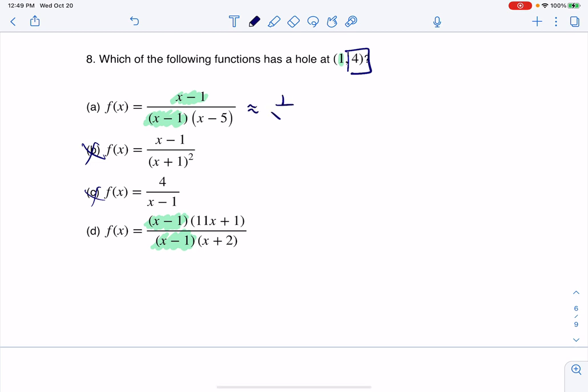This function basically looks like 1 over x minus 5. All right. And this one basically looks like 11x plus 1 over x plus 2. And where I'm getting that is I'm literally canceling out or dividing out that common factor that's in the numerator and denominator.